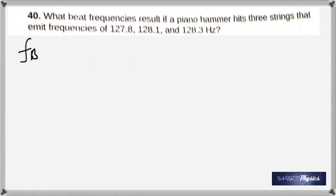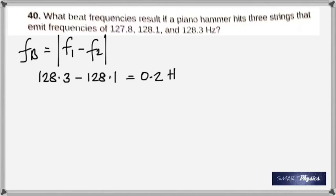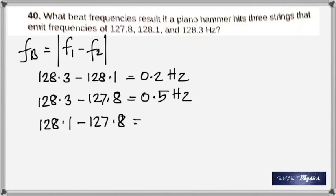Now this is about beats. What beat frequencies result if a piano hammer hits 3 strings that emit frequencies of 127.8, 128.1, 128.3? What do you know about beats? Beat frequency means the number of beats produced per second is simply the difference between the two frequencies. Now since you have three frequencies, you're going to have multiple differences. And we always take the absolute value of the difference. So these are the differences that are possible between each one of them, taking two at a time. So those are going to be the beat frequencies heard.